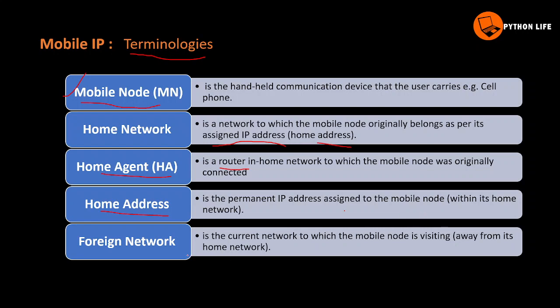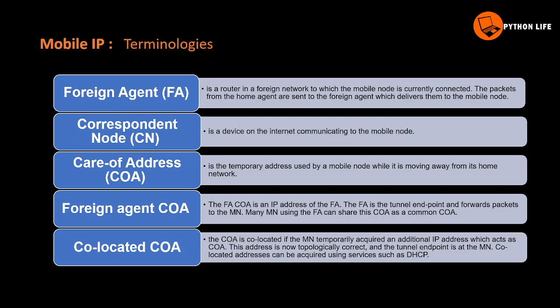The foreign network is the current network to which the mobile node is visiting, away from its home network. If you visit another place, the mobile network is a foreign network. The foreign agent is a router in a foreign network to which the mobile node is currently connected. The packets from the home agent are sent to the foreign agent, which delivers them to the mobile node.